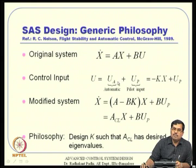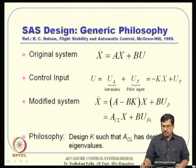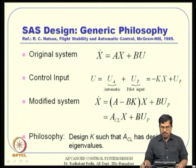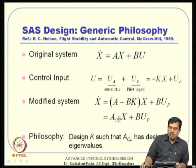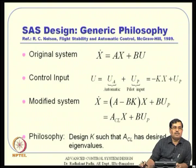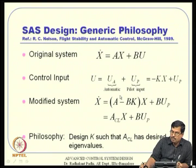Part of the control is automatically designed and built in to give stability behavior to the system; the rest comes from U_P given directly by the pilot. This is what stability augmentation system design is all about: the original A does not have good stability behavior, but by making part of the control operate automatically we give the desired stability behavior to the system. This desired stability behavior can also accommodate handling quality requirements. The philosophy is to design K such that A_CL has desired eigenvalues.